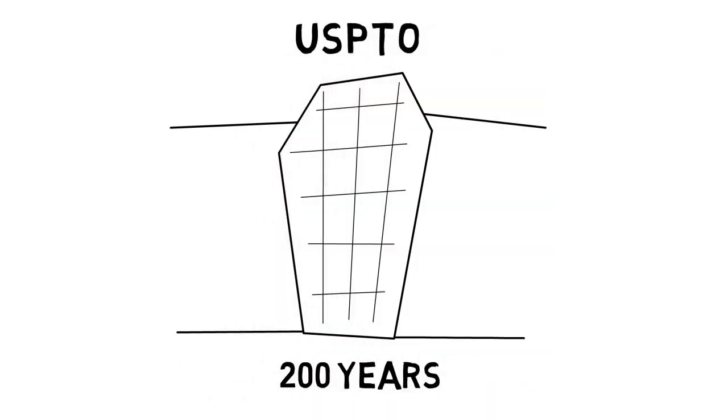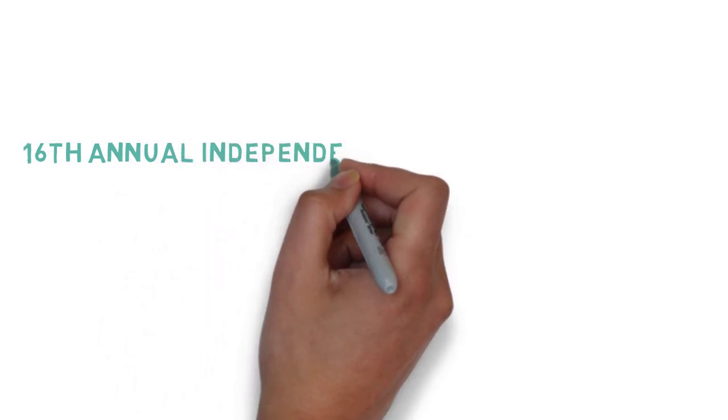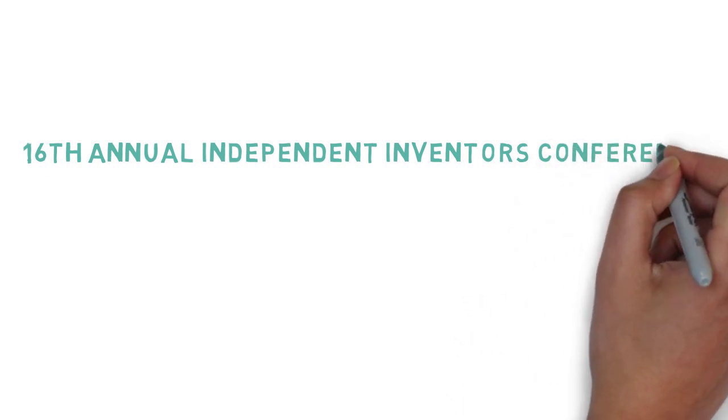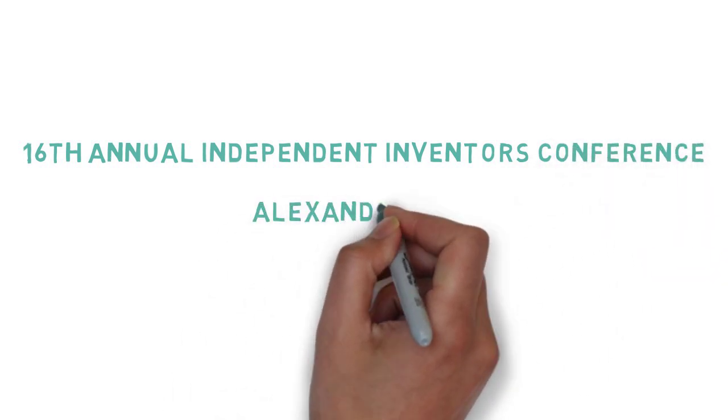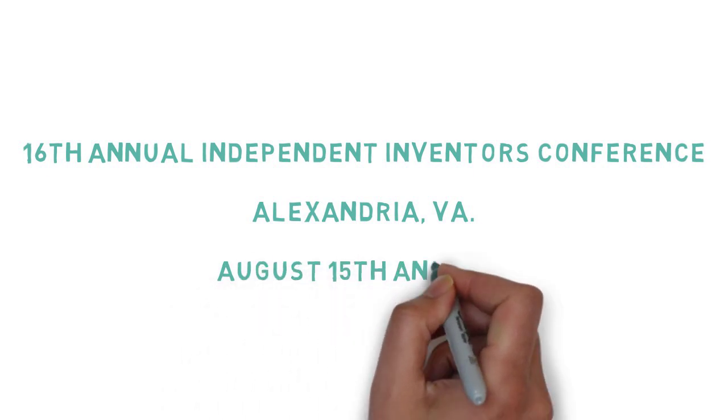So the inventions and innovations you have are protected. To better help you navigate the patent and trademark systems, we are holding our 16th annual Independent Inventors Conference back home on our main campus in Alexandria, Virginia, on August 15th.